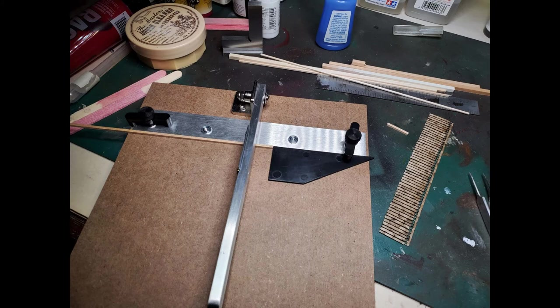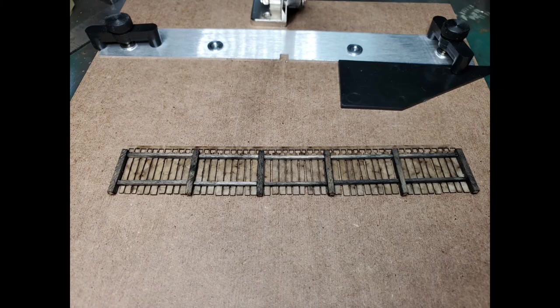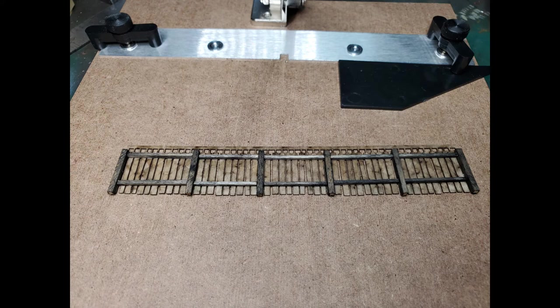Then I moved on to the fence. And I started cutting fence posts and fence rails. And I glued all those parts to the fence boards with white glue.